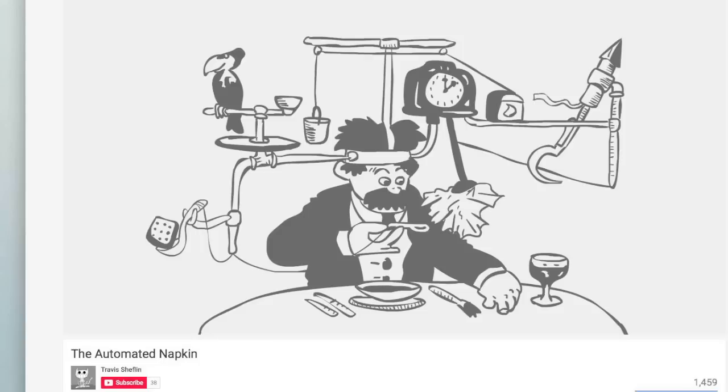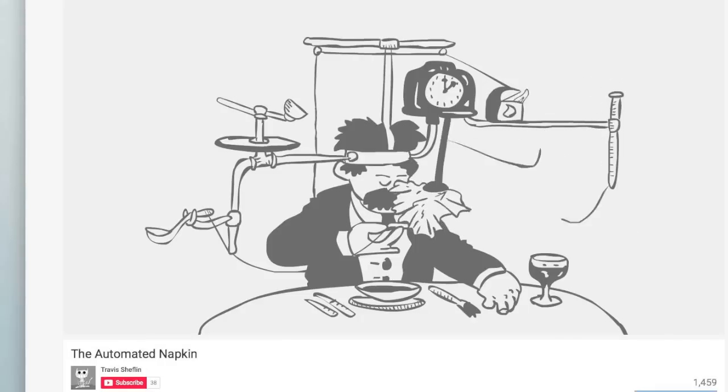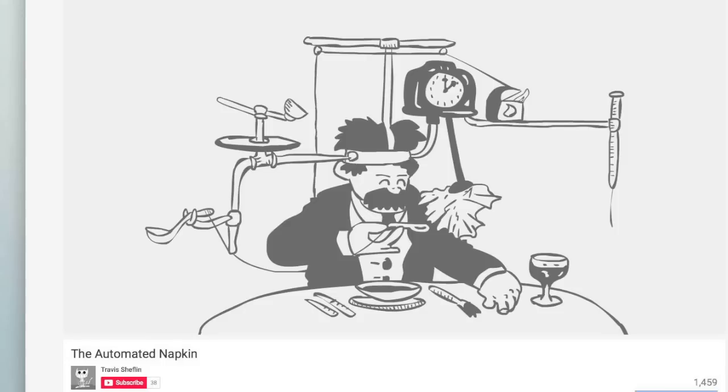A Rube Goldberg machine is a series of convoluted and complicated actions that in the end performs a relatively simple task. The concept was invented by cartoonist and inventor Rube Goldberg, who would often depict such machines in his cartoons. A famous example of his work is Professor Butts and the self-operating napkin. The machine would automatically wipe your face after you would raise your soup spoon to your mouth. Here, the cartoon was fantastically animated by Travis Sheflin and gives you a sense of the machine's absurdity.